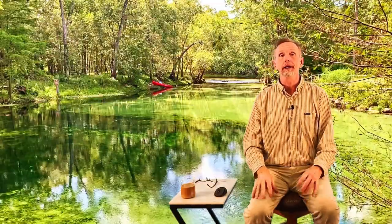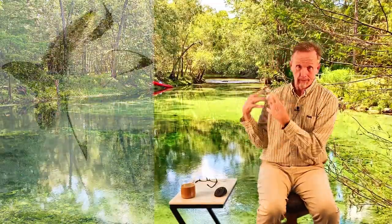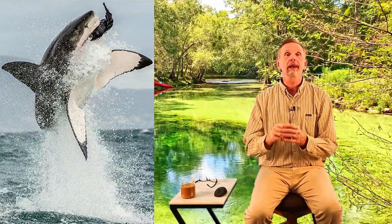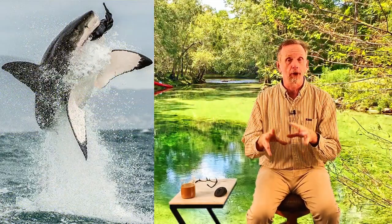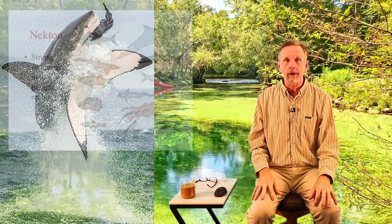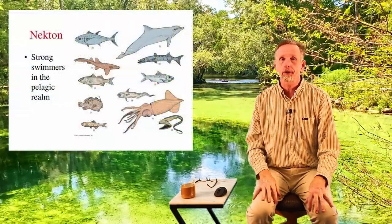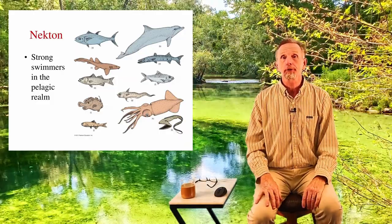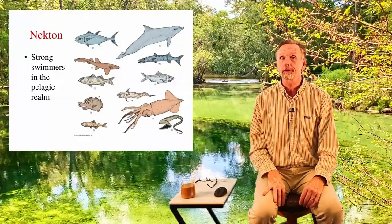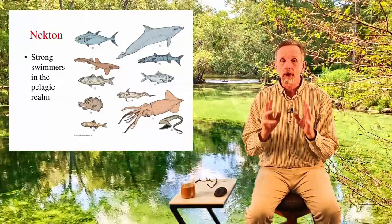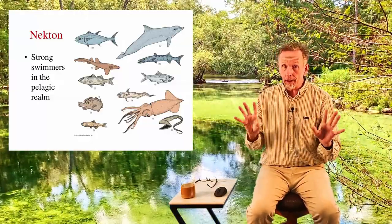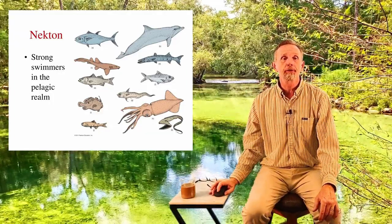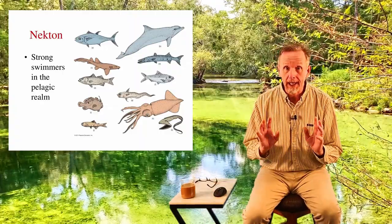The second term is necton — free swimmers. These are out in the actual water and can swim against the current. Trout, salmon, minnows, fish of virtually any kind. It also includes things like squid and turtles. As long as it can swim independent of the currents — it can go against it or with it depending on what it wants to do — we refer to these as necton.